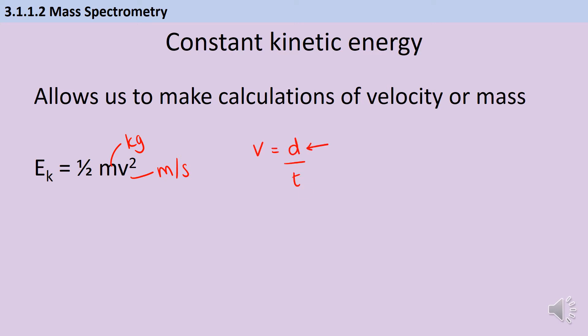When we say distance we mean the length of the flight tube, and when we say time we mean the amount of time that it takes for that ion to experience drift.